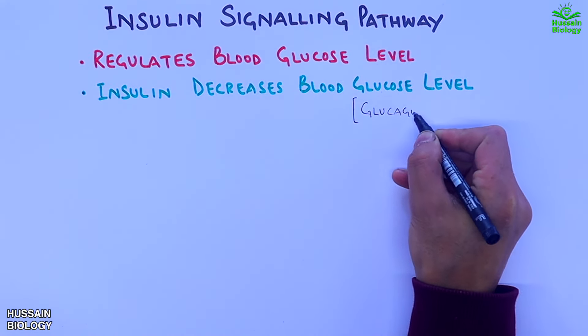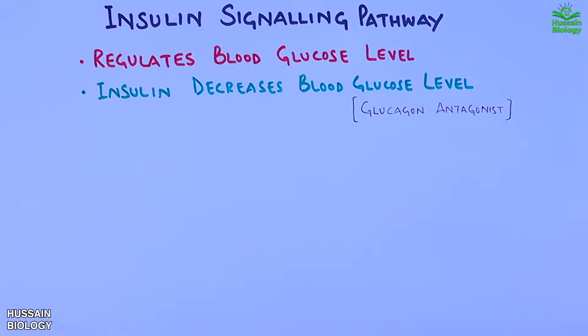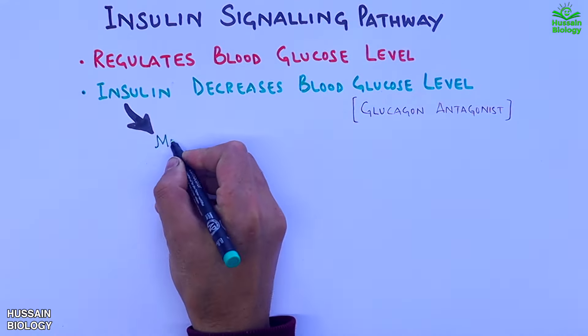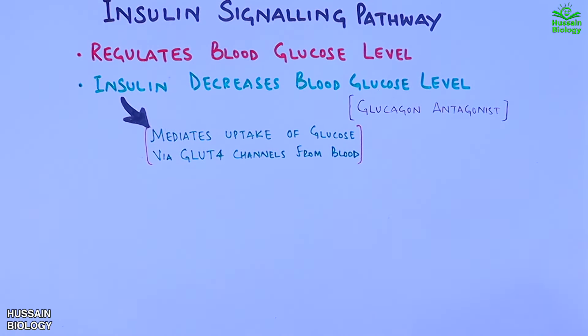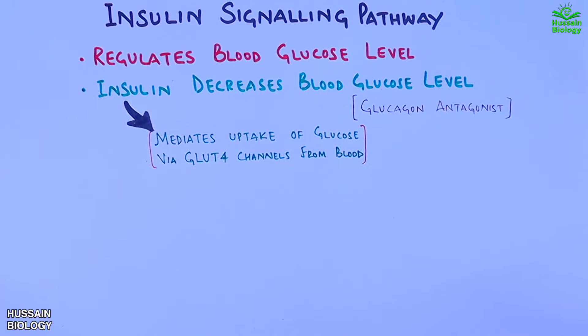It must be noted that glucagon is the antagonist of insulin. The insulin pathway basically mediates the uptake of glucose molecules from blood via GLUT4 channels.